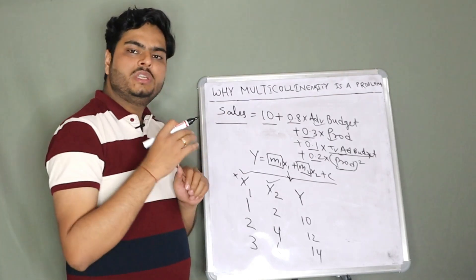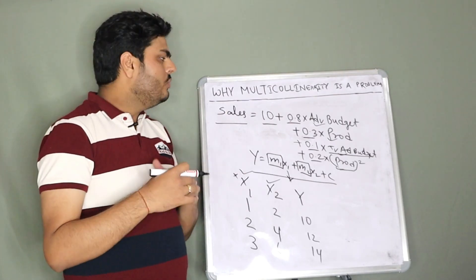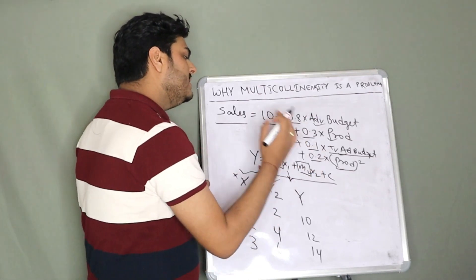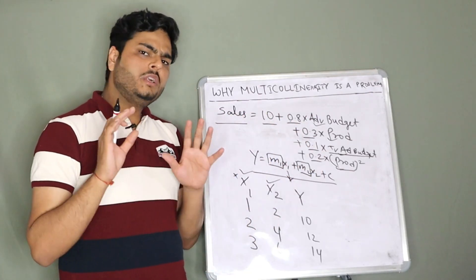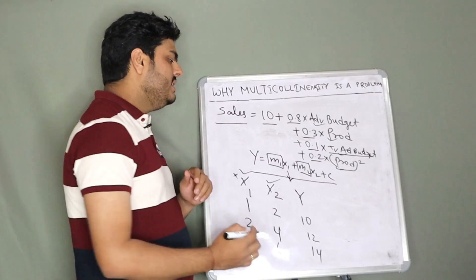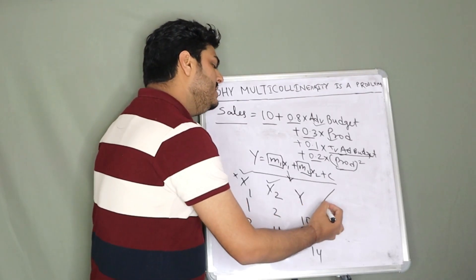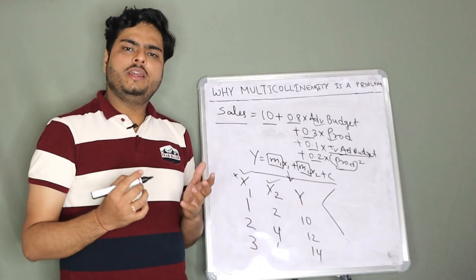This applies for both positive and negative correlation. Now, what do we do if we have this type of data? There are two, three ways. One way is, if you have limited number of features in your data, let's say 20, 30 features.